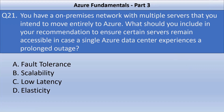Question number 21. You have an on-premise network with multiple servers that you intend to move entirely to Azure. What should you include in your recommendation to ensure certain servers remain accessible in case a single Azure data center experiences a prolonged outage? Your options are fault tolerance, scalability, low latency, or elasticity. The key thing here is you need to provide a solution which ensures the servers are still available even if an Azure data center is offline, which means we are looking for fault tolerance.